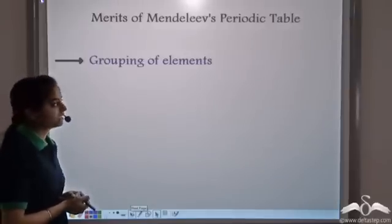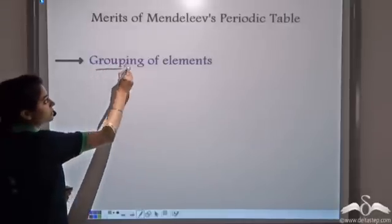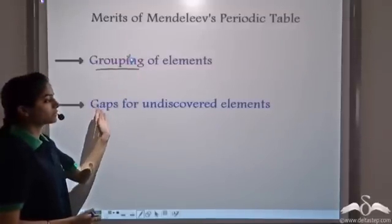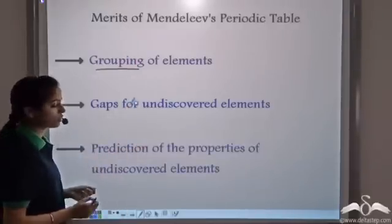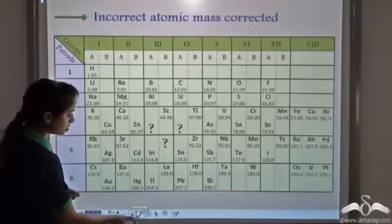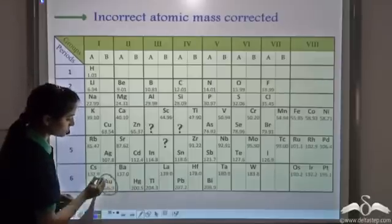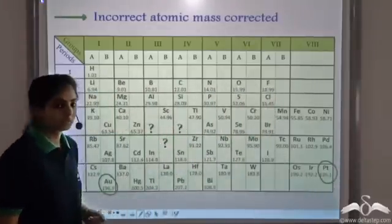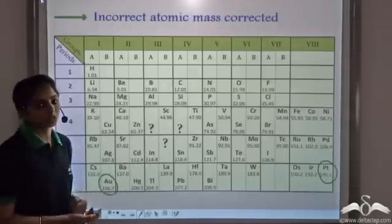Let's see some of the merits of Mendeleev's periodic table. He was able to group the elements in a very systematic manner. He had left gaps in the periodic table for undiscovered elements and was able to predict their properties. Also, another achievement was that he was able to correct some atomic masses — when he placed gold and platinum based on their properties, he found that the earlier known atomic masses were not correct, and he corrected them.